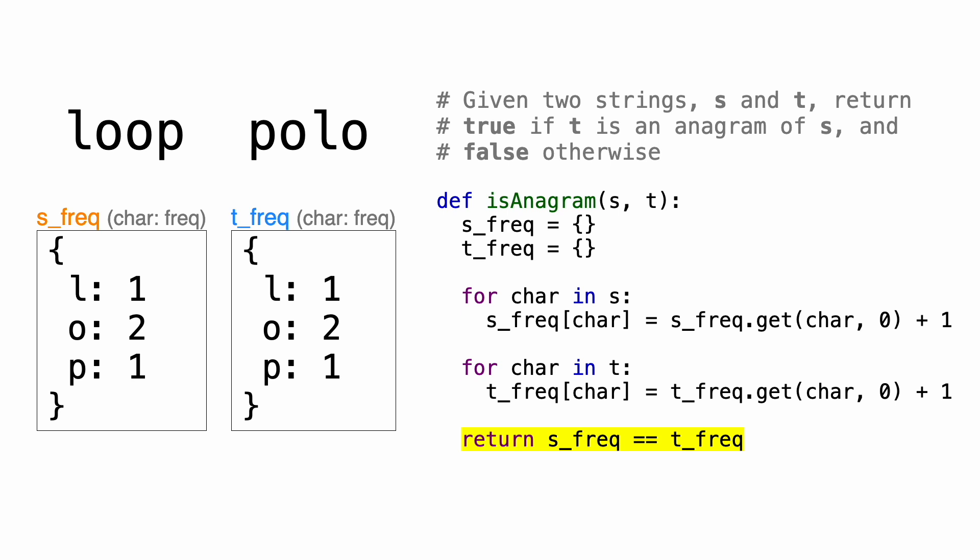And if the dictionaries were different from each other, then that means that the two strings have different character frequencies, so they are not anagrams of each other, and we would return false. So in this case, both dictionaries have the same contents, so we return true, which means that loop and polo are anagrams of each other, and we are done.